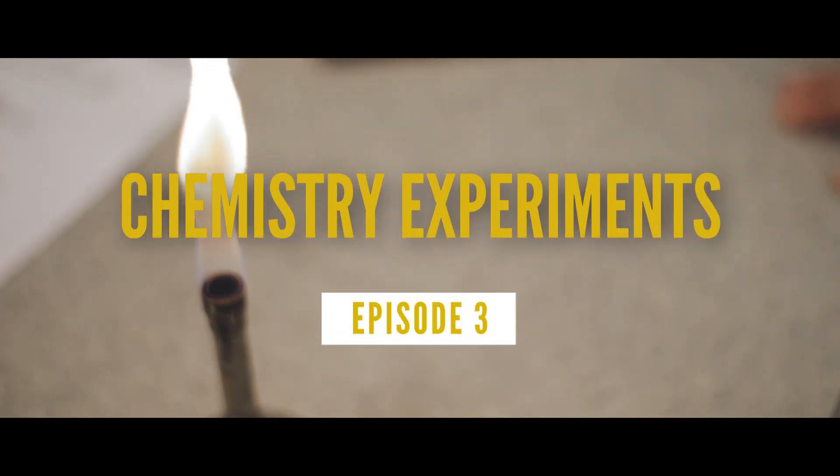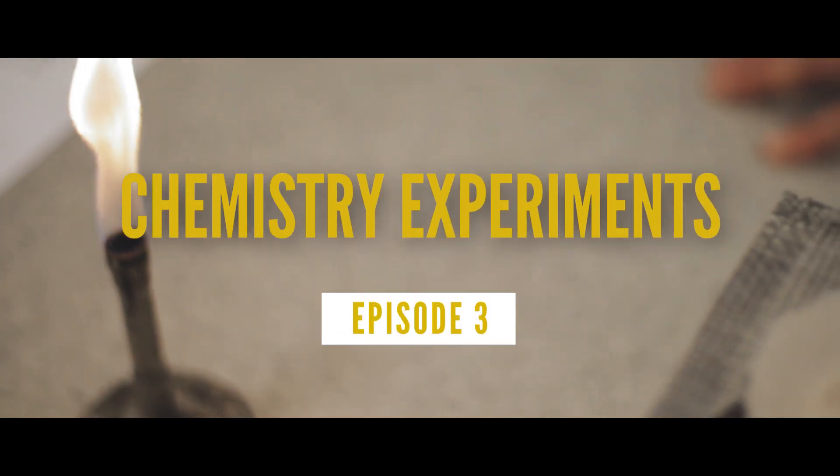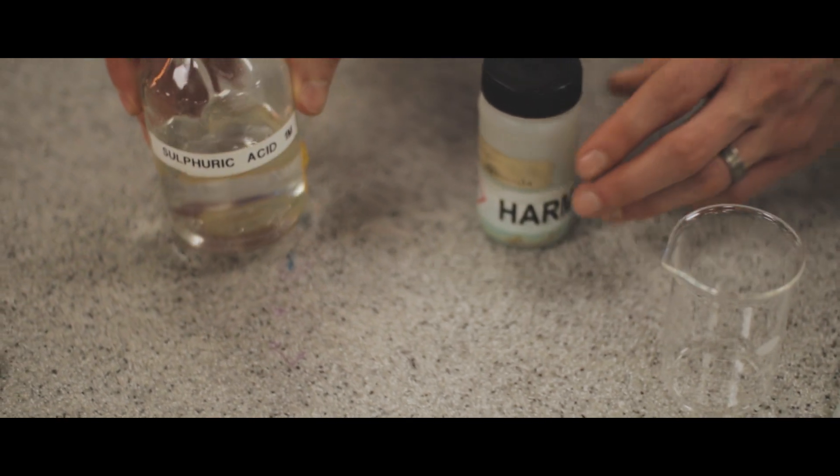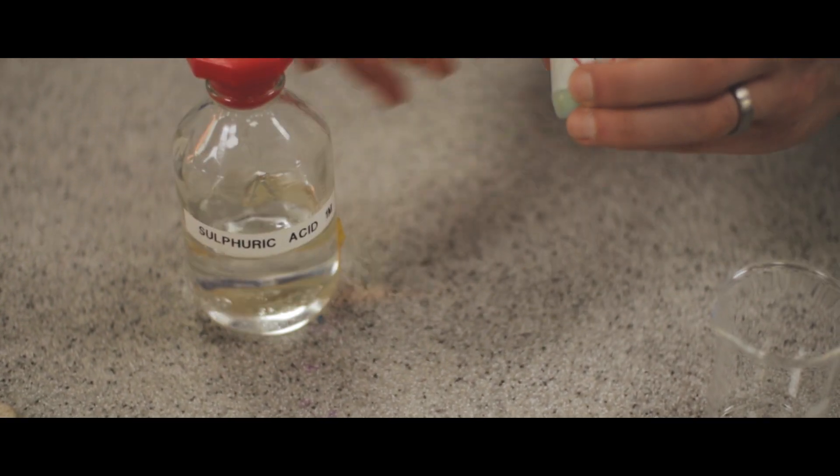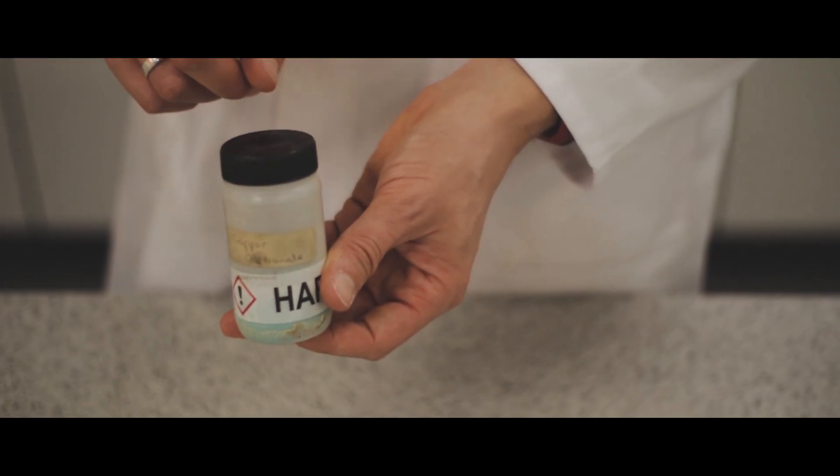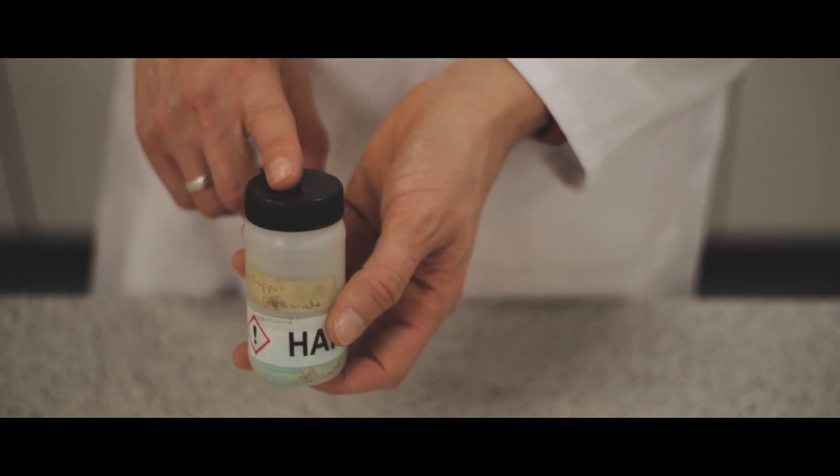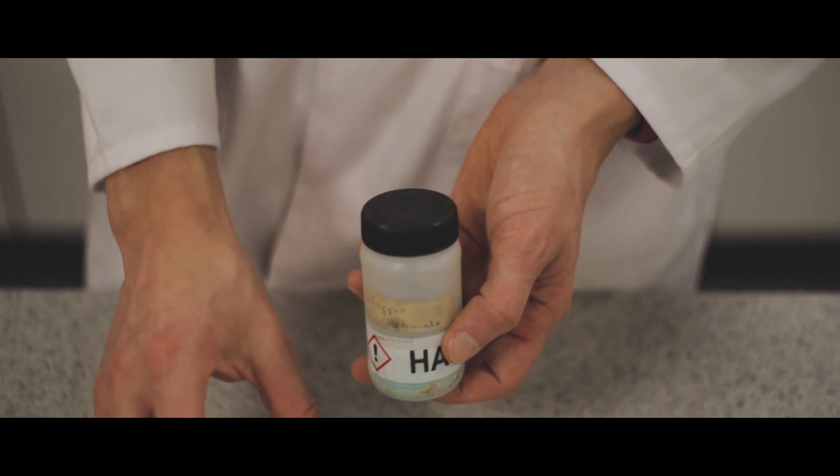In this experiment, we're going to be producing a metal salt. We're going to be producing copper sulfate by reacting sulfuric acid with copper carbonate. So that's going to make the salt copper sulfate, but we're also going to make carbon dioxide and water.